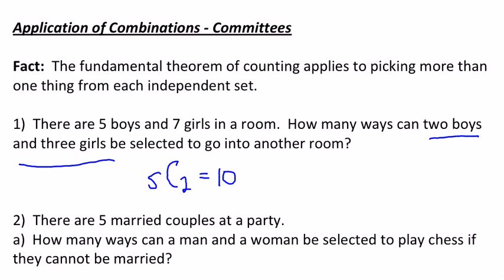And then I look at the girls, and I say seven choose three, which is seven times six times five over three times two times one. Three times two is just six, and so seven times five is thirty-five. So there's ten ways to choose two boys. Each pair of boys can be paired up with each pair of girls, and so you've got ten times thirty-five.